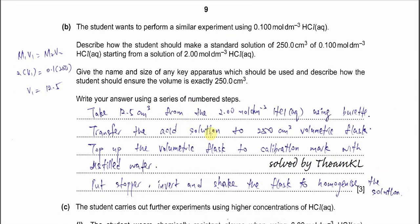Part B. The student wants to perform a similar experiment using 0.1 mol per dm³ - just now was 2 mol per dm³, now is 0.1 mol per dm³. Describe how the student should make a standard solution of 250 cm³ of 0.1 mol per dm³ using 2 mol per dm³. Before you plan, at least you must calculate the volume that's needed - the volume of this 2 mol per dm³. Use M1V1 = M2V2. M2V2 is the one we want to prepare, so it's 0.1 times 250, and initial concentration is 2 mol per dm³. We know that we're going to take 12.5 cm³ from this solution.